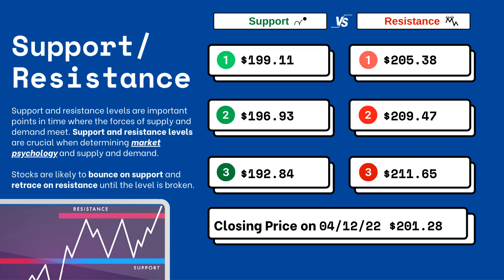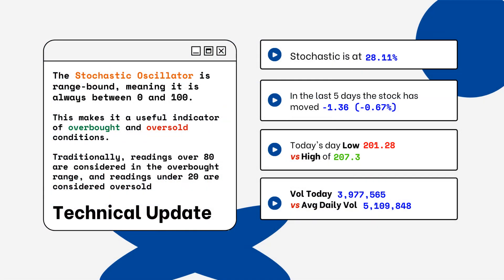These are areas that you want to watch when you're looking at this particular stock. Stocks typically bounce at support levels and they resist at resistance levels, meaning they'll retrace from that top level. You can see on the right side where the stochastic level is on this particular stock.